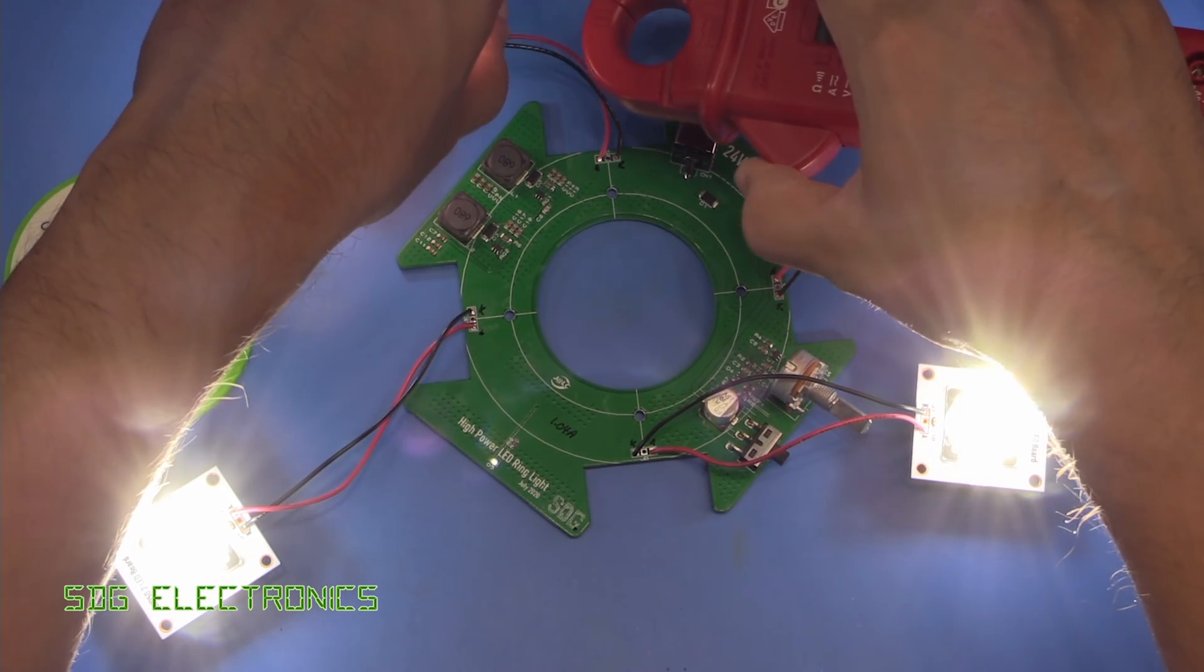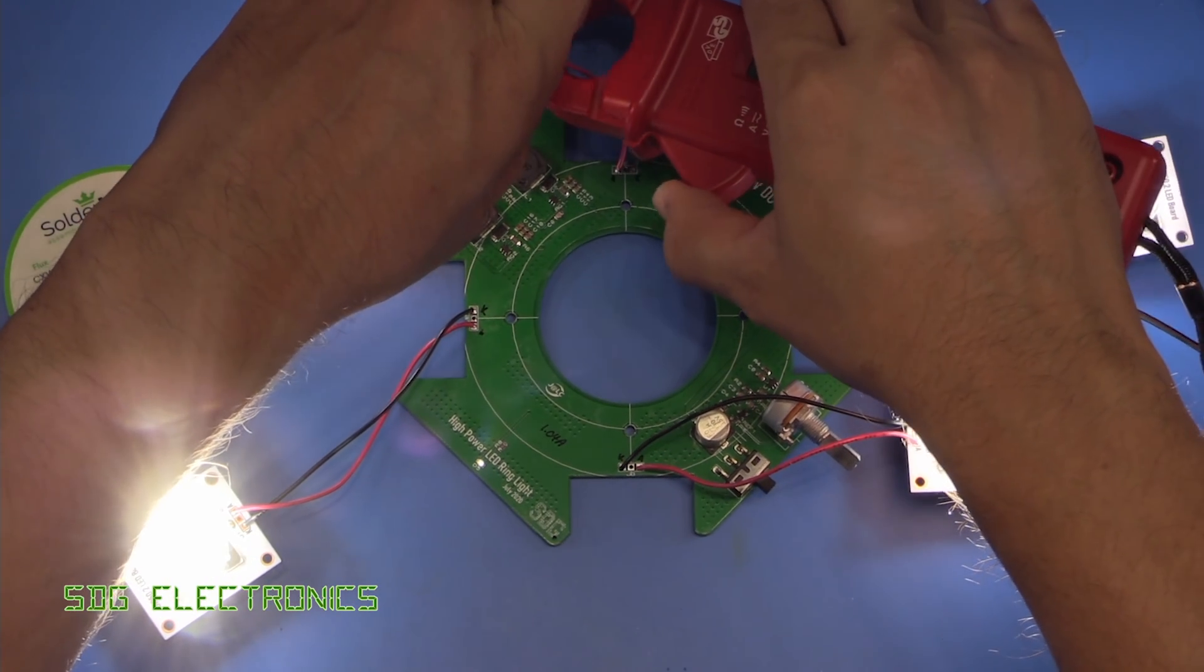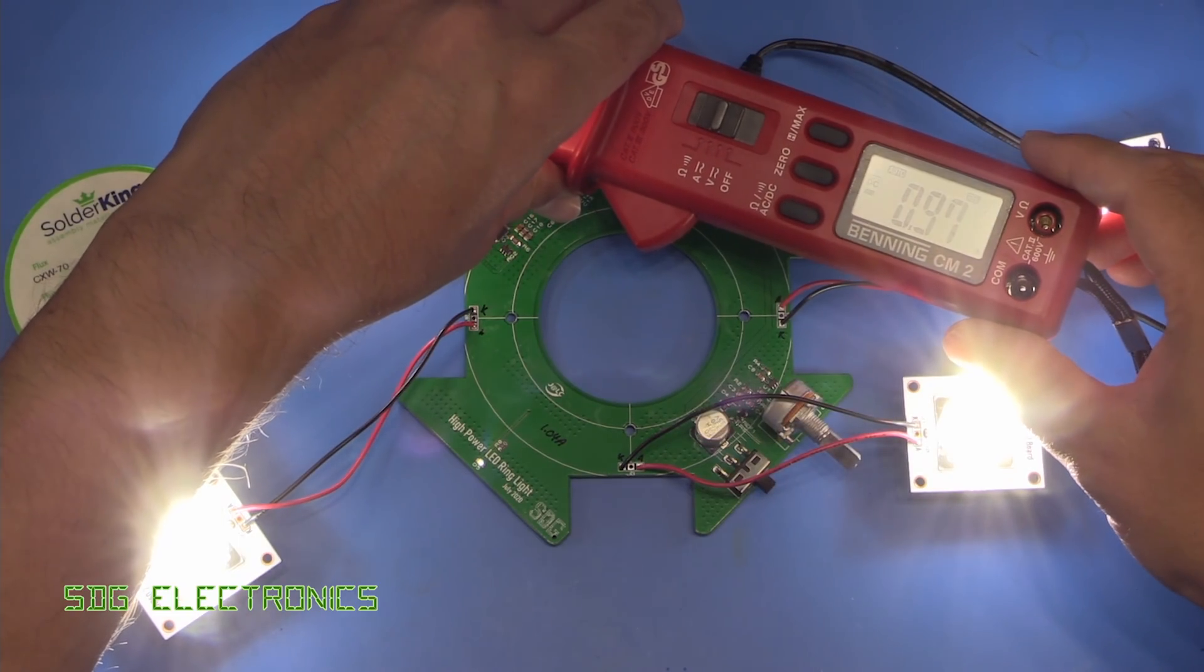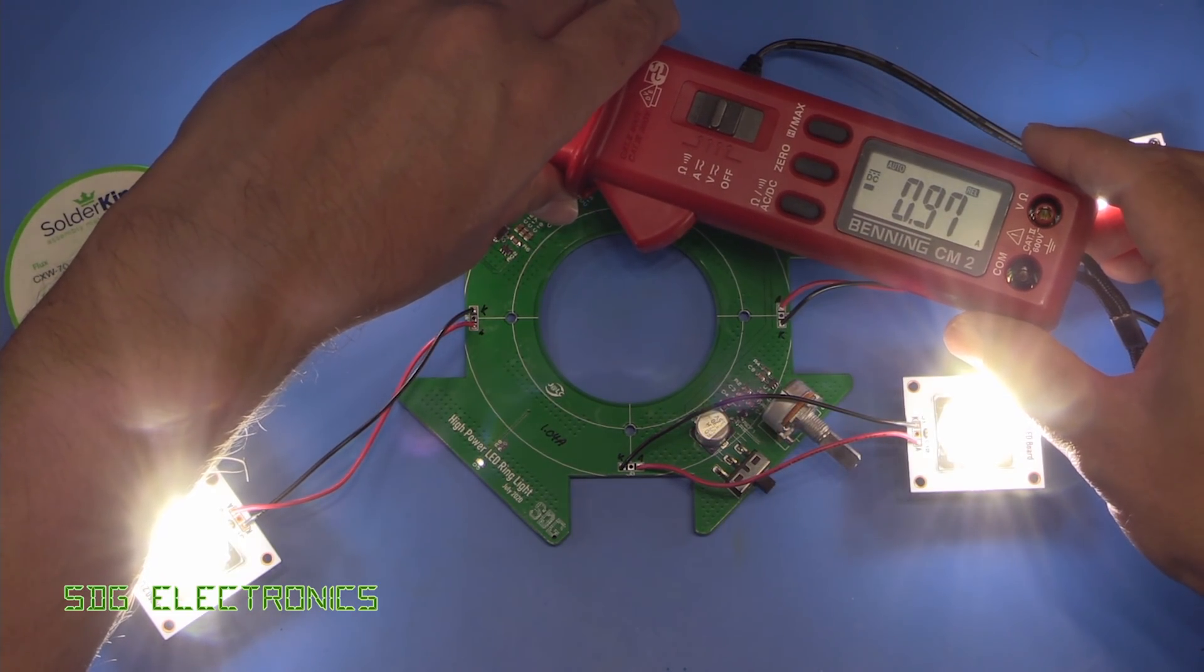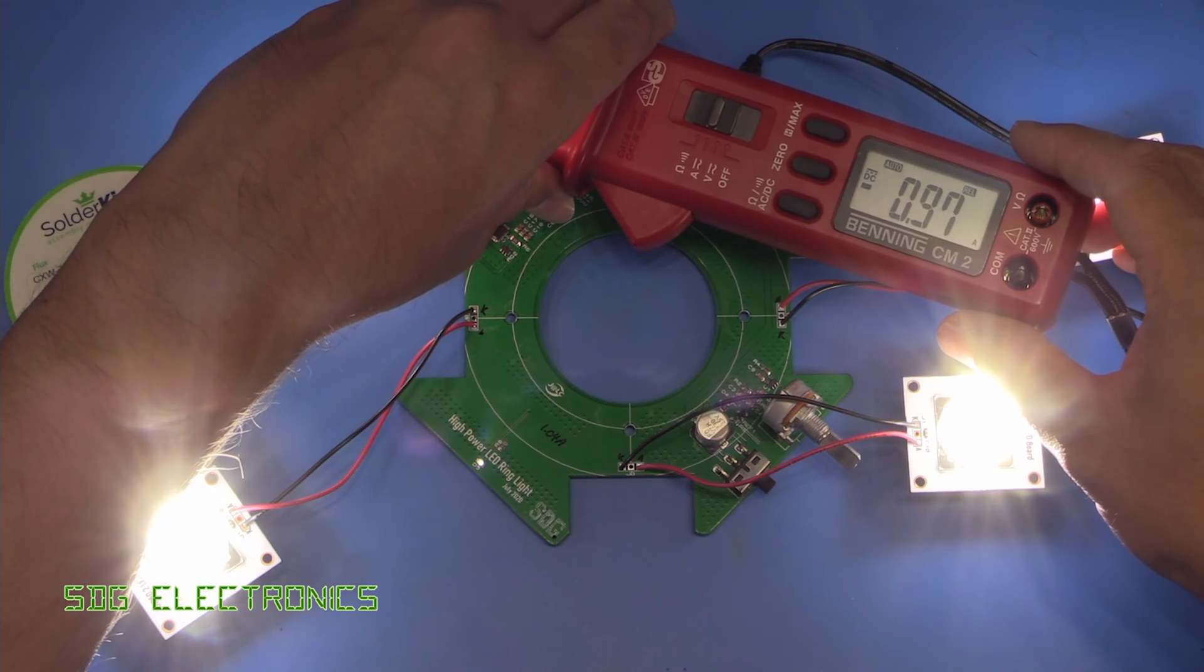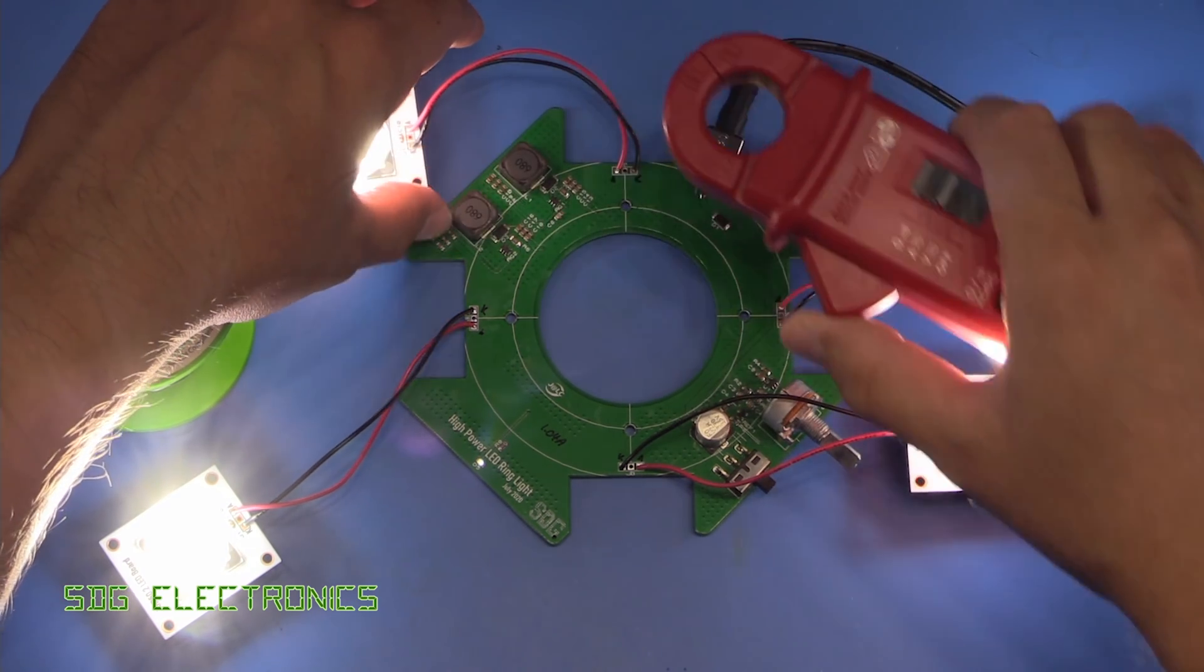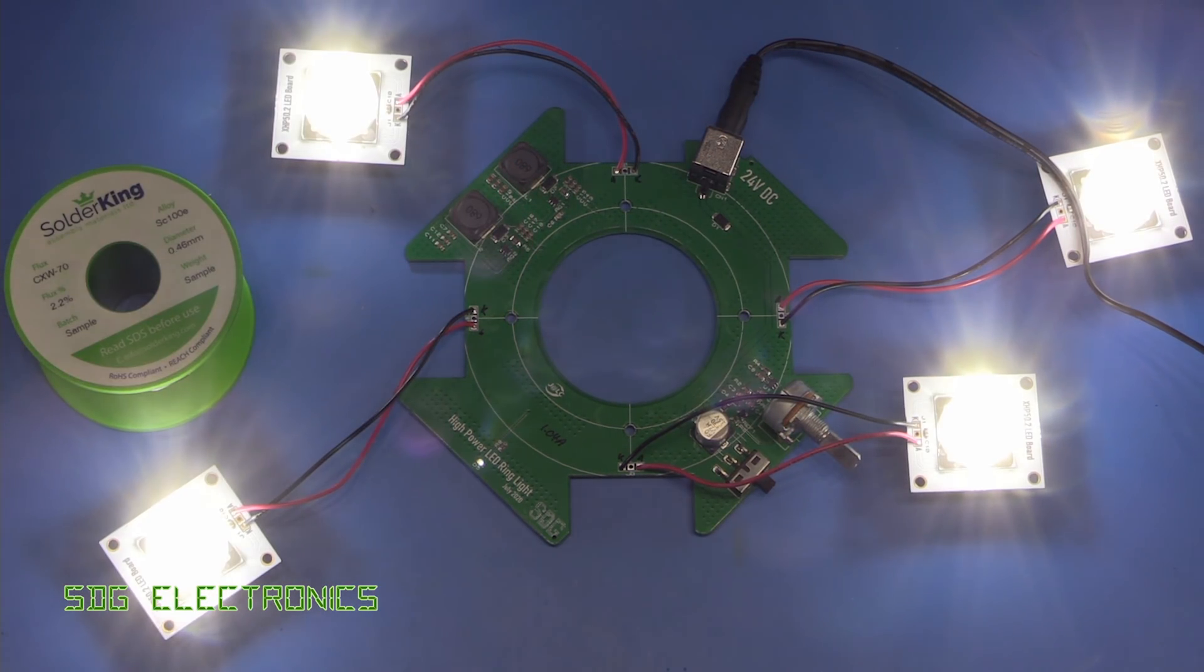0.95 amps, slightly less than what I was expecting. Let's just check the other string. So we're at 0.95. And what's this one doing? 0.97. So a little bit more. There's going to be a little bit of tolerancing with both the reference voltage on the ICs and also those two resistors. But they seem to be working nicely. So let's put it in the plastic chassis.